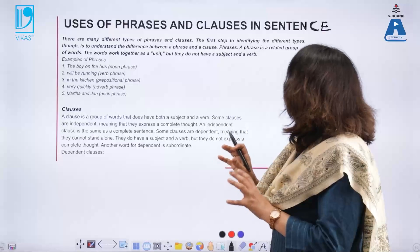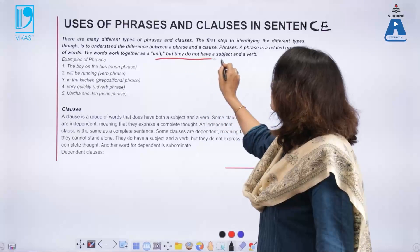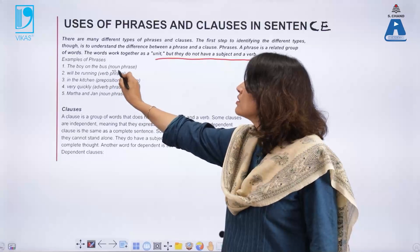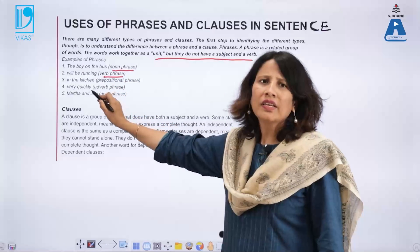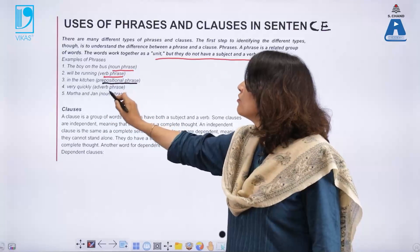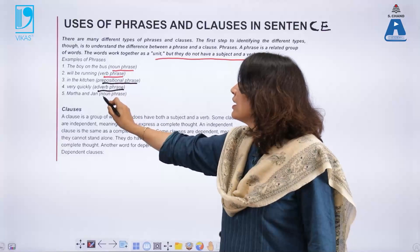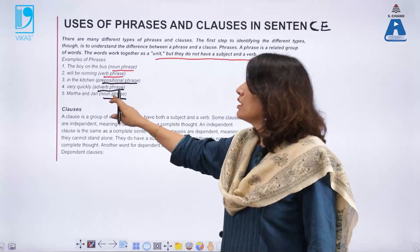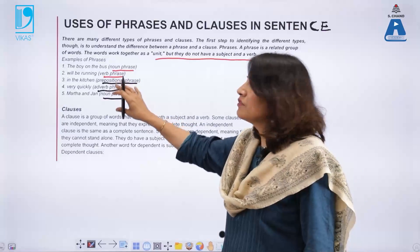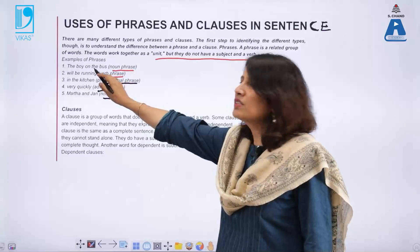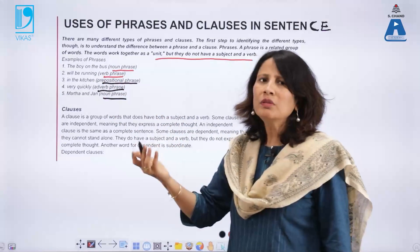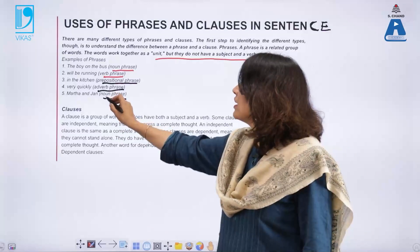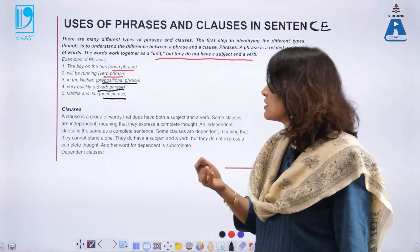A phrase is a related group of words that work together as a unit, but they do not have a subject and a verb. For example: 'the boy in the bus' is a noun phrase, 'will be running' is a verb phrase, 'in the kitchen' is a prepositional phrase, 'very quickly' is an adverb phrase, 'Martha and Jan' is a noun phrase. We decide what kind of phrase it is by the part of speech used — boy is a noun, running is a verb, in is a preposition, quickly is an adverb, Martha and Jan are both nouns.